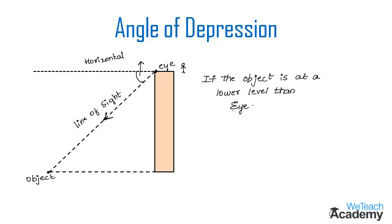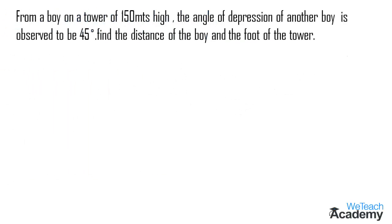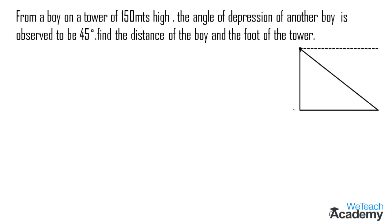Now let me explain a few examples on this concept. From a boy on a tower of 150 meters high, the angle of depression of another boy is observed to be 45 degrees. Find the distance of the boy from the foot of the tower. Let me explain this using a rough diagram. Let us assume that AB is the height of the tower, which is 150 meters.